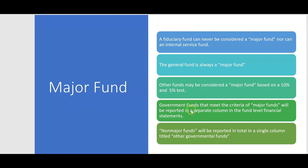Why are we doing this test? Because government funds that meet the criteria of major funds will be reported in a separate column in the fund-level financial statements. Non-major funds will be reported in total in a single column titled 'other governmental funds.' The same applies for enterprise funds — major enterprise funds get a separate column, while non-major enterprise funds are reported in total in a column titled 'other enterprise funds.'